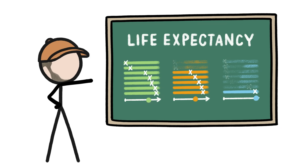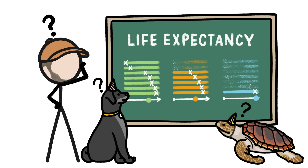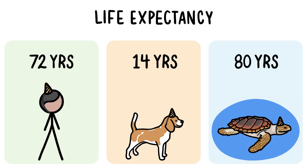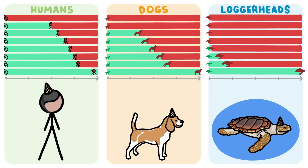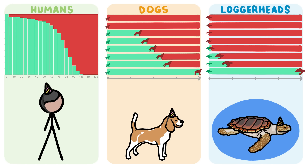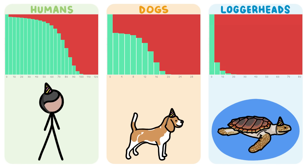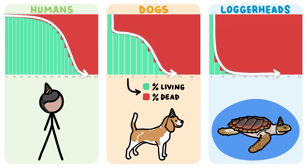These conflicting definitions of life expectancy make it really hard to understand how these animals live and die. Instead of focusing on a singular number, we can actually learn much more about animals by graphing all the different ages when they die, which we can then convert into an equivalent graph showing what percentage of individuals are expected to survive to any given age.